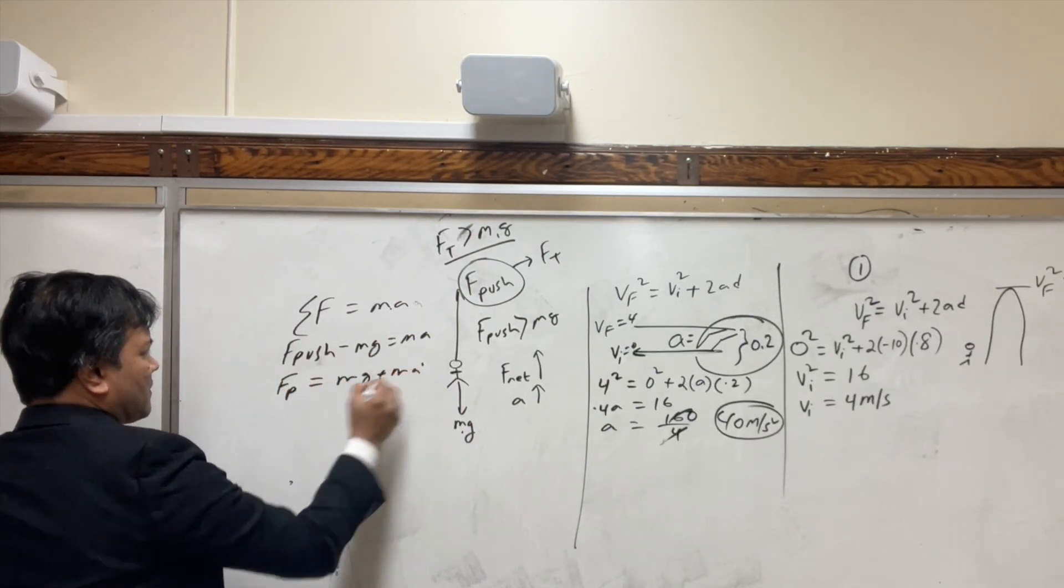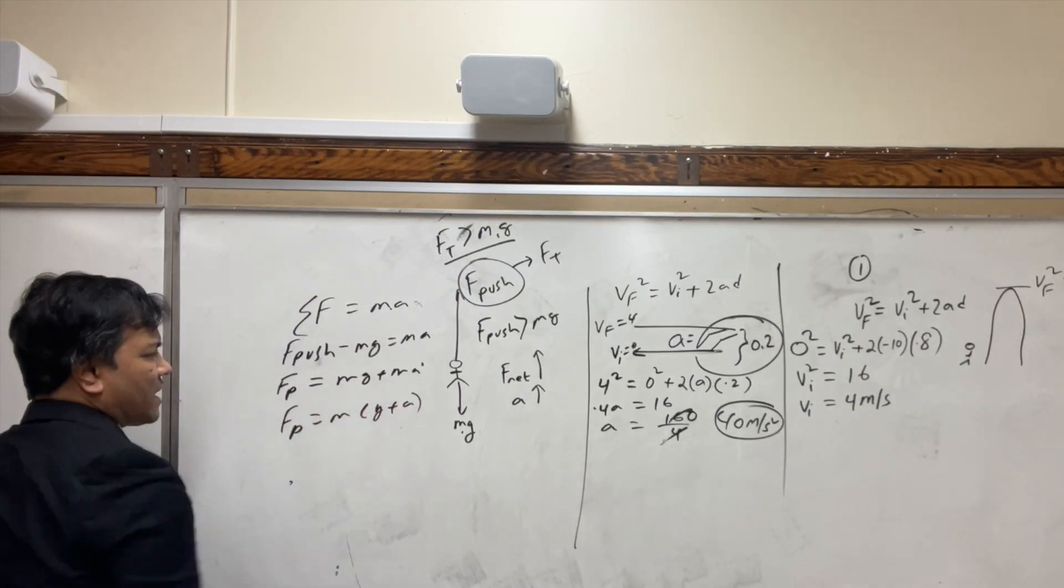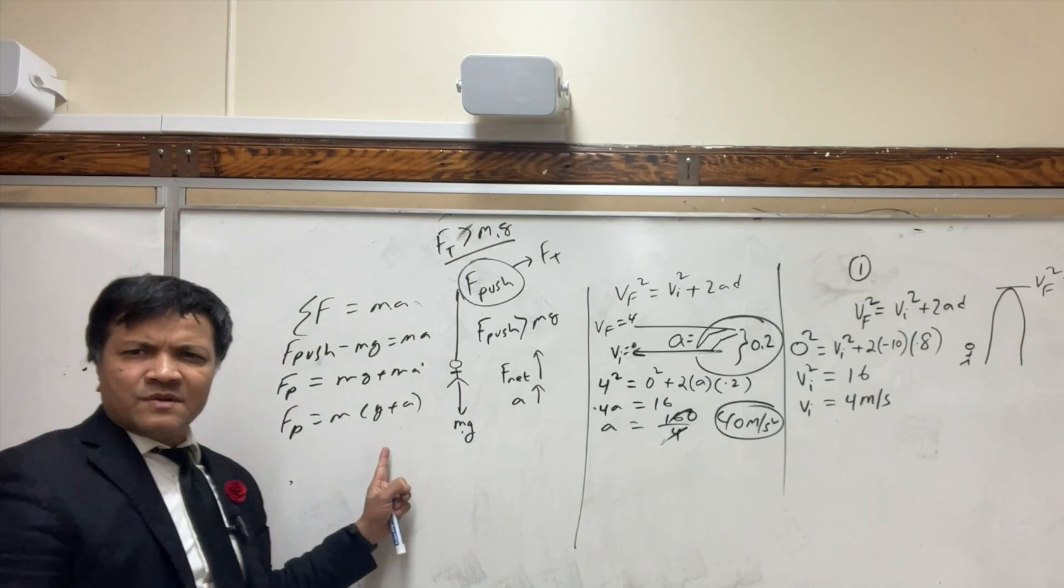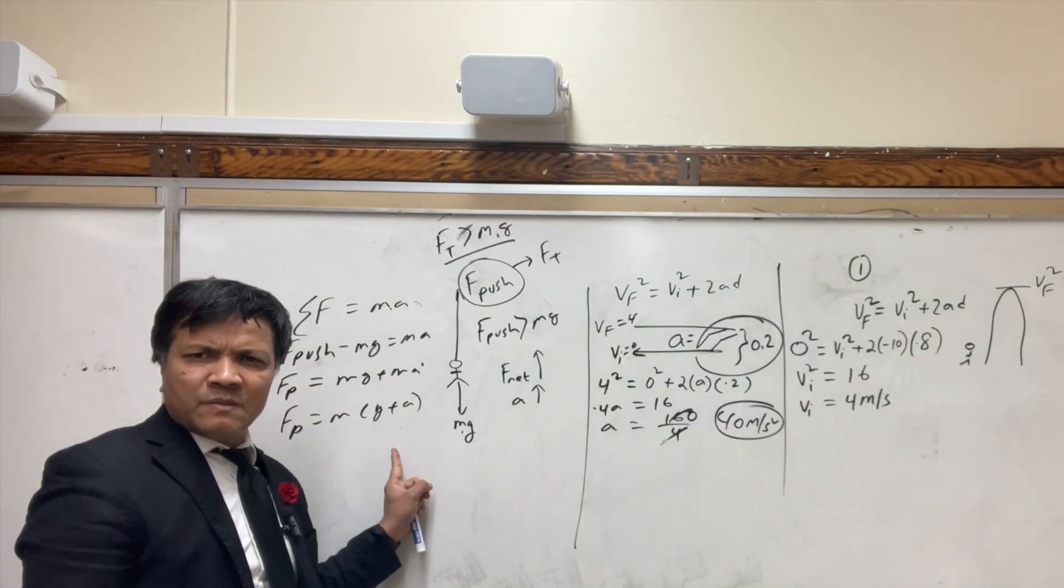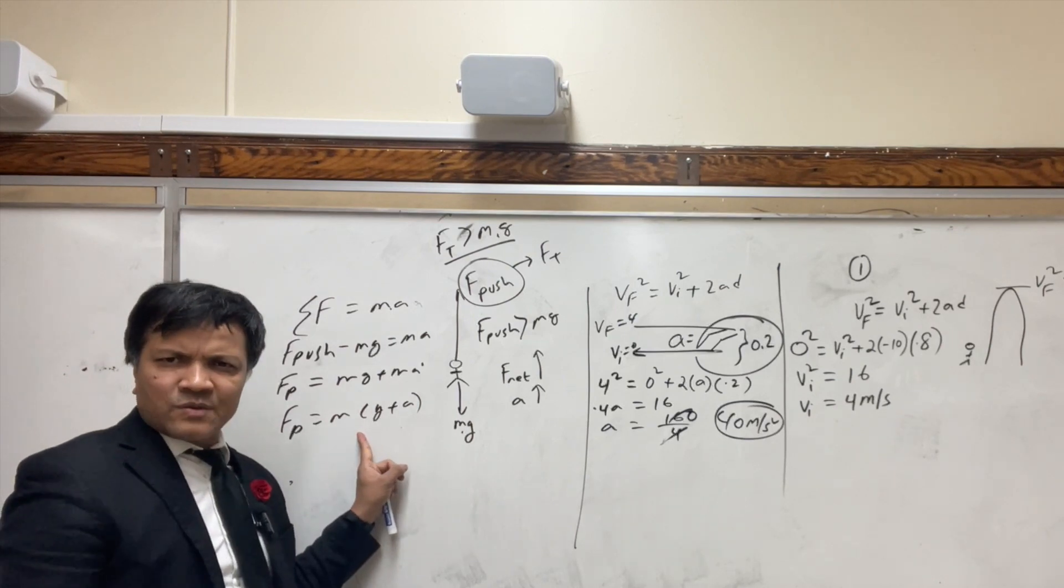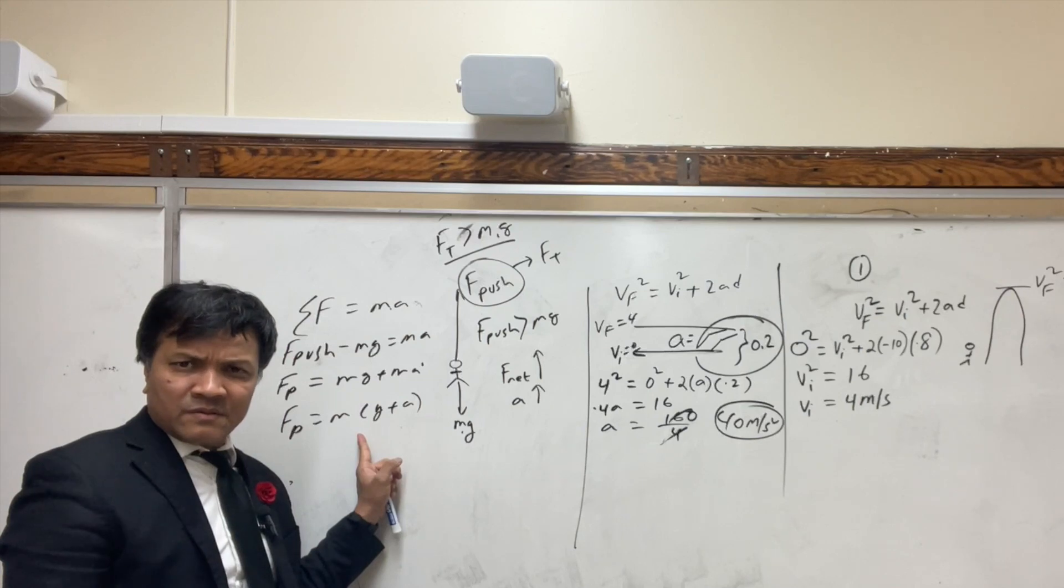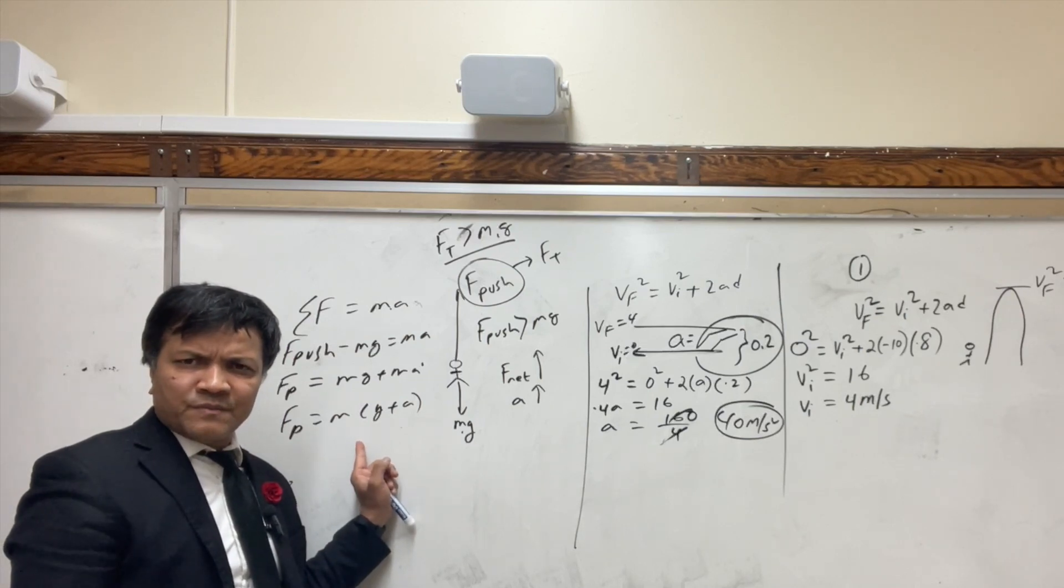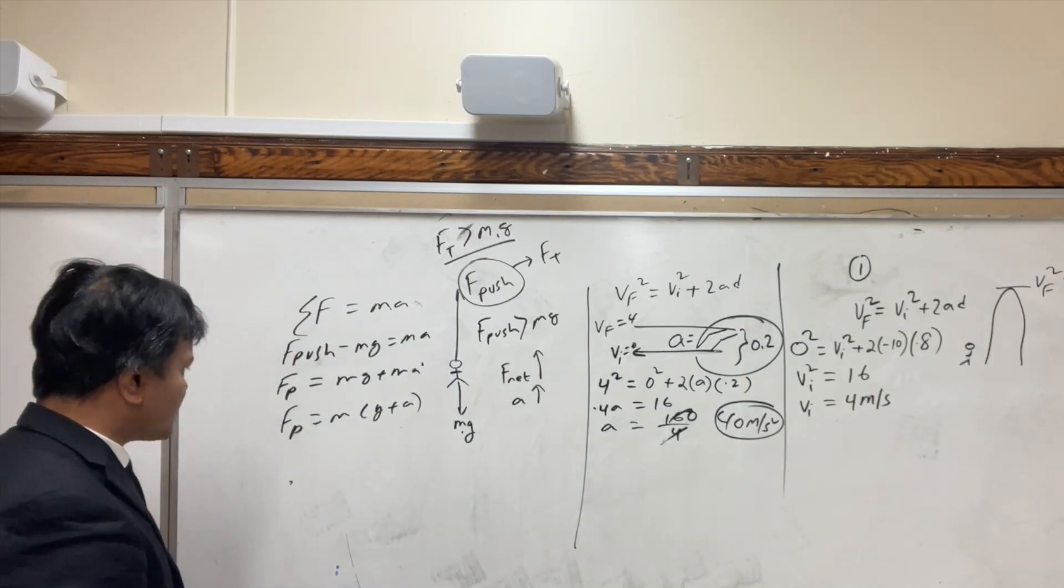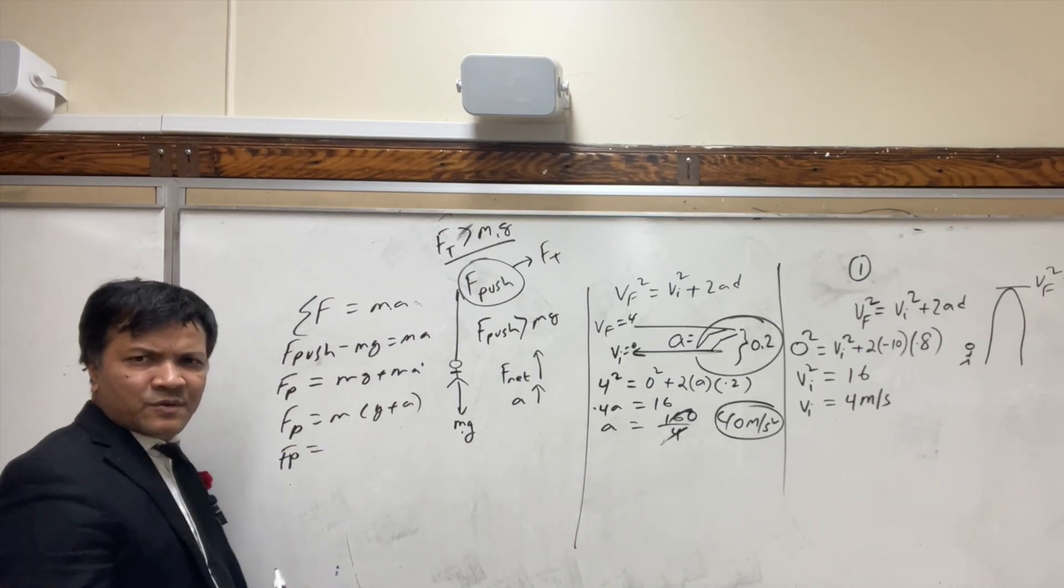F_push is equal to m(g plus a). As I said, every single human being is kind of an elevator or an Atwood machine. This is the equation that we derived the other day on Thursday and yesterday in the classroom. So now you see this question again, this time is for you or for me.